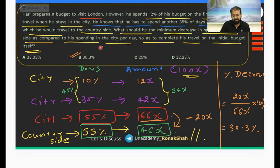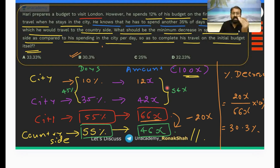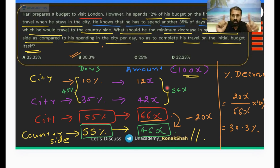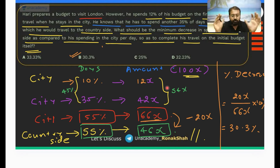We know how many percent of days he is trading in the city, what amount he has spent, and in the countryside how many percent days he's going to stay and what amount he's going to spend. We have to compare the city amount with the countryside amount, so somewhere we need to make the days equal — we can make it for 55% of the days.